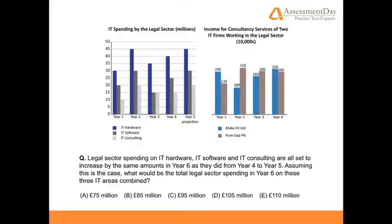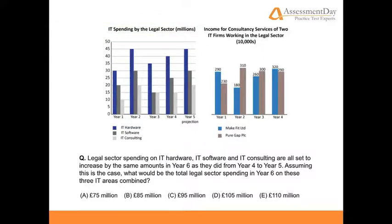This style of question gives two graphs on which to extrapolate data. Take a cursory glance at the graphs. We can see the graph on the left refers to IT spending by the legal sector. We have three variables: IT hardware, IT software, and IT consulting. A variable describes an element of the data — something that can be used in the calculation or analysis. If you want to save time, we may go straight to the question. Having looked at just the one graph, we already have context, which may be enough to start with.